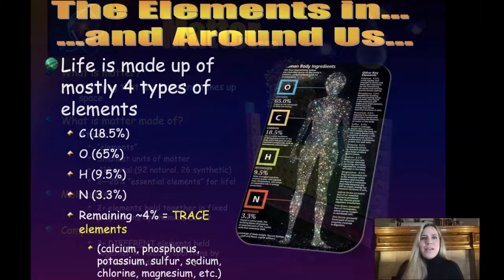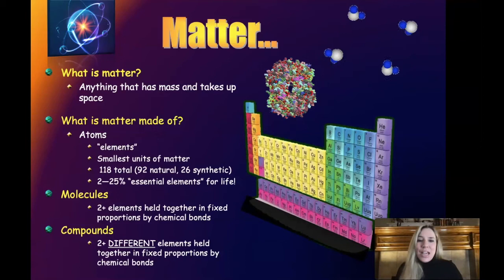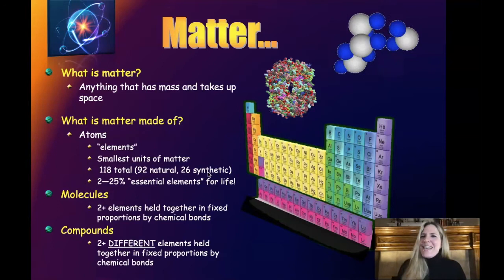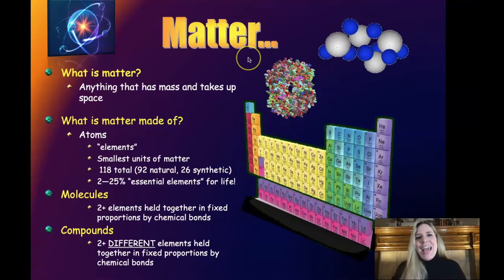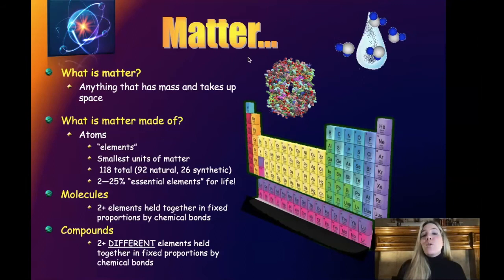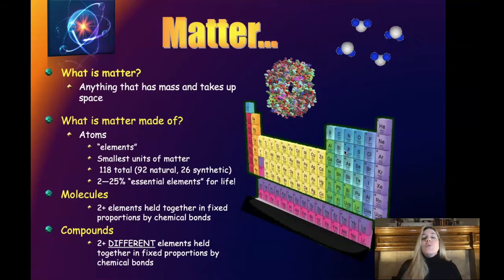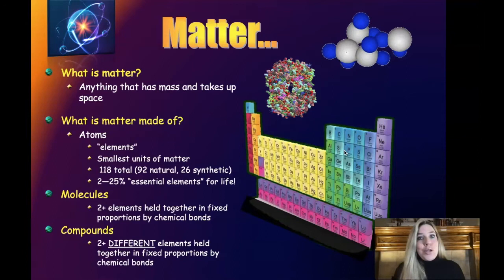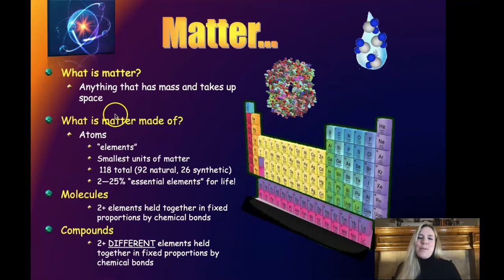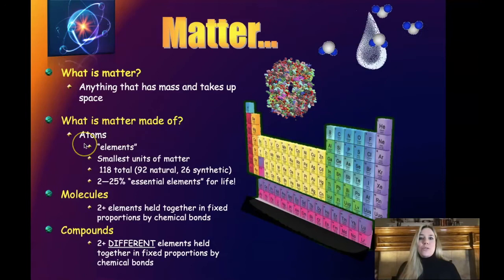We've talked about the periodic table — 118 elements, 92 natural, 26 synthetic. But what are they exactly? These elements are the purest form of what we call matter. Nothing can be created nor destroyed because matter is in its purest form. If you destroy an element of matter from the periodic table, you either change the type of matter it is, change the element you're dealing with, or create a nuclear explosion. Matter is anything that has mass and takes up space, and it's made of atoms. Atoms come in the form of those 118 elements, 92 of which are natural.